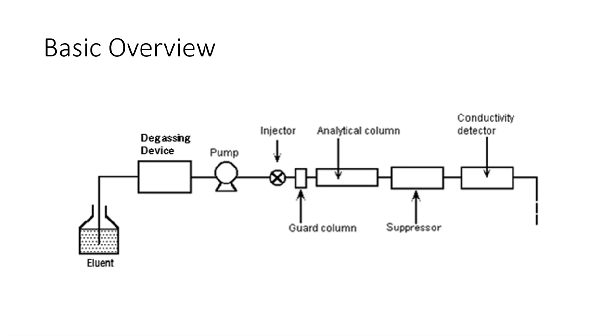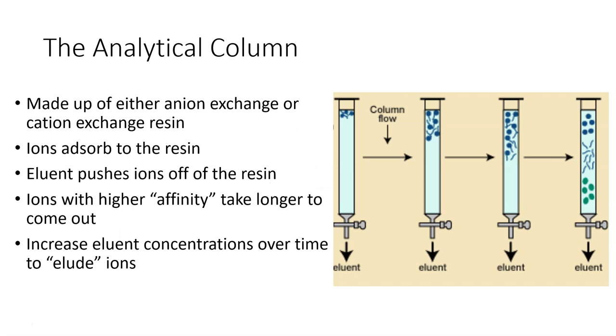Now that your sample has been drawn into the auto sampler and injected by the injector, it'll pass through a guard column which takes out any nasty things you don't want like hydrophobic organics or heavy metals, and then the sample goes into the analytical column.